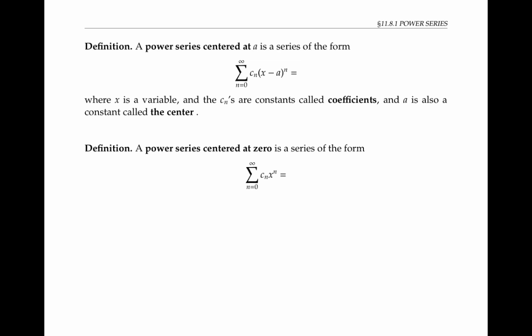If I expand out the power series and write out the first few terms, it looks like this, where C sub zero is the constant term. Notice that x minus a to the zero is taken to be one, even when x equals a.